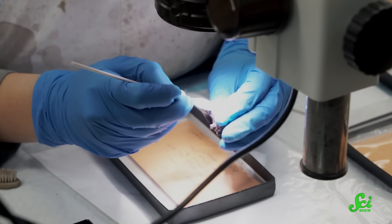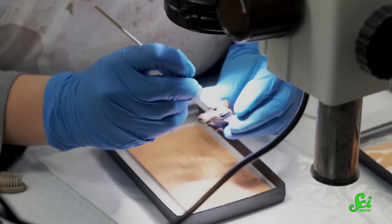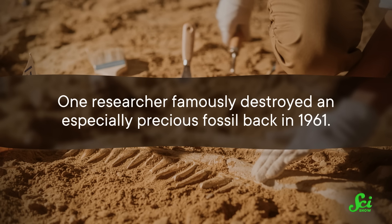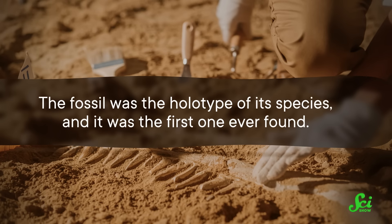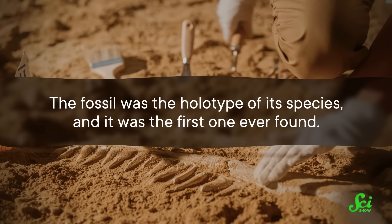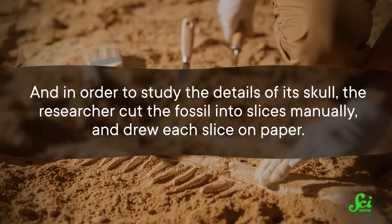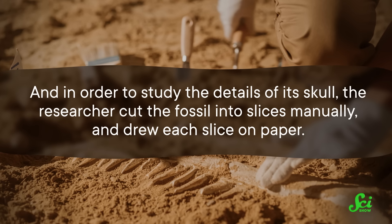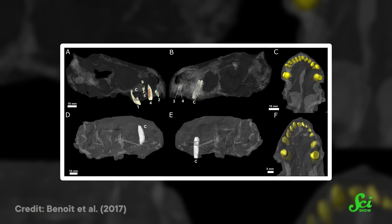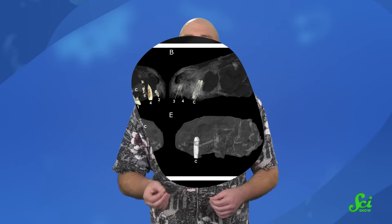Virtual fossils are also important in preserving the fossils themselves, because analysis can be hard on a specimen, and fossils can be very fragile. One researcher famously destroyed an especially precious fossil back in 1961 — it was the holotype of its species and the first one ever found. In order to study the details of its skull, the researcher cut the fossil into slices manually and drew each slice on paper. He did learn a lot about the anatomy of the animal's skull, but when that fossil was gone, that was it. They tried to preserve a copy by making a wax cast, but wax is soft and that cast deformed over time. A modern CT scan can produce images just like those slices without actually cutting into anything, so these days we can get just as much information without the bone saw.